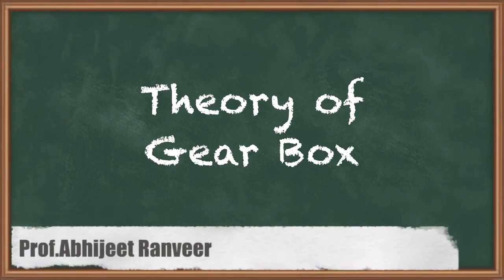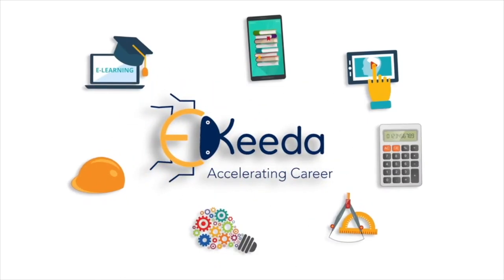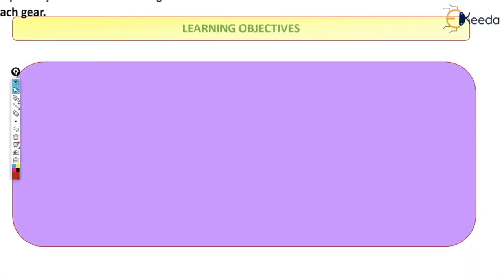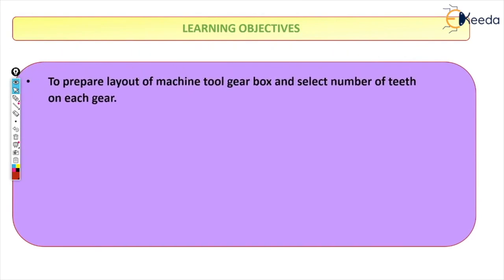Hello everyone. In this video we will study about the design of the gearbox, which is the chapter of design of mechanical systems. The main objective of this chapter is to prepare a layout of machine tool gearbox and select the number of teeth on each gear. In the numerical we will see in detail what this means, but this is just the theory part.